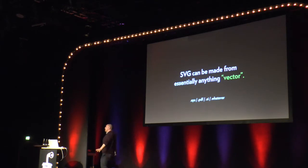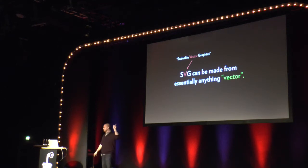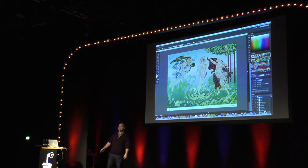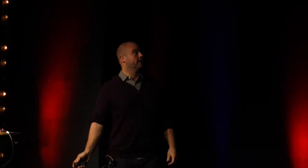SVG can be made from anything vector at all. If you have a file with vector content, you can get it into SVG. SVG stands for Scalable Vector Graphics. The point I'm trying to drive home is: if you can get it in Illustrator, it can be SVG. Adobe did a good job back in the day and made it a native file format of Illustrator. You don't export SVG from Illustrator — you just save as, and it can just be an SVG, ready to use for the web.